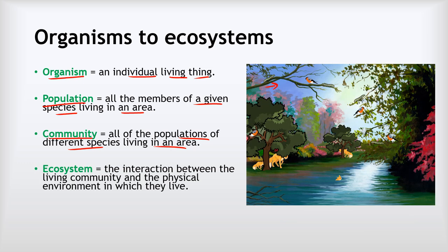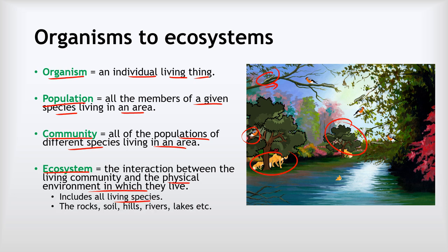All of those then combine together to form what we call an ecosystem. An ecosystem is the interaction between the living community and the physical environment in which they live. We can see all those different organisms — foxes, chaffinches, caterpillars, trees — all combining together to form the ecosystem. Ecosystems include all of the living species in an area but also the rocks, the soil, the hills, the rivers, the lakes and all of that as well.